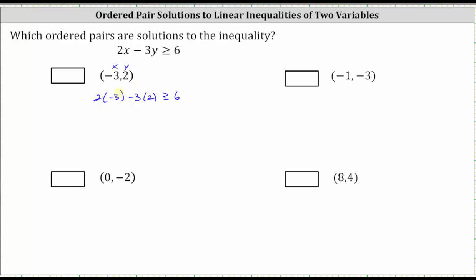Simplifying the left side: two times negative three is negative six. We have negative six minus three times two, which gives us minus six, greater than or equal to six. Negative six minus six is negative 12, giving us negative 12 greater than or equal to positive six. Negative 12 is not greater than or equal to positive six, so the ordered pair is not a solution. We do not check the box.